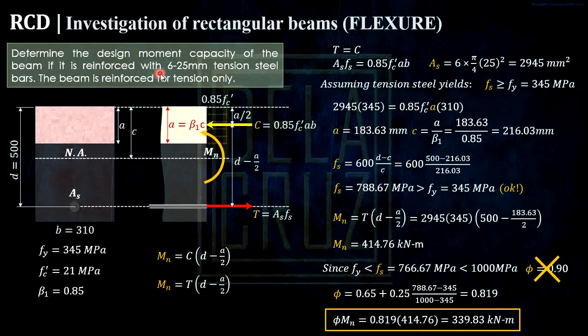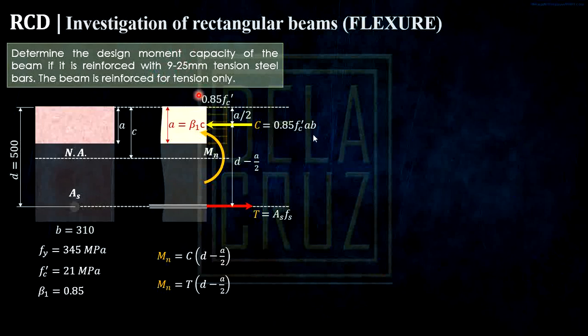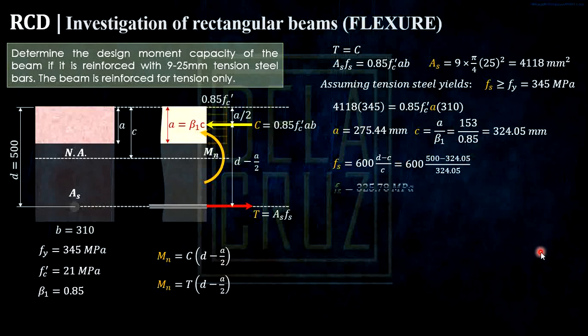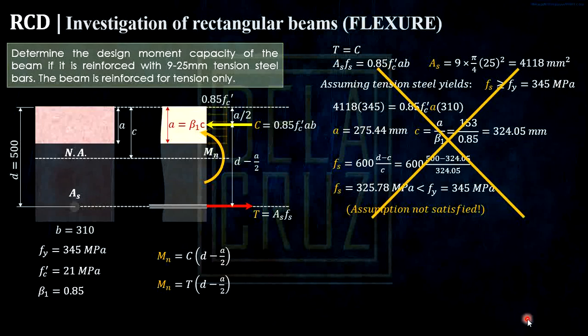What if we make this larger, put 9 bars? What will happen to your reduction factor? The same solution. Calculating As, then assuming tension steel yields, substituting the values here, we get A and we get C. Then prove by using this Fs formula and this will be the Fs. As you see, that is less than fy, which is wrong in our assumption. The assumption is not satisfied. That means these solutions here are all wrong.